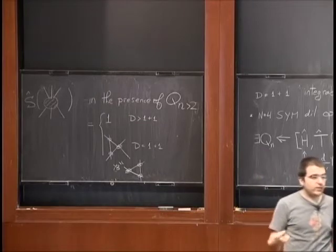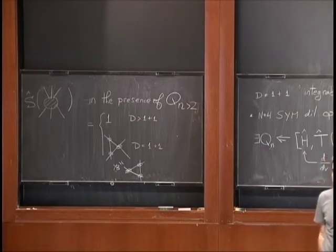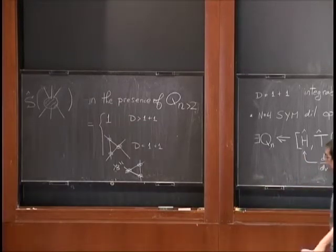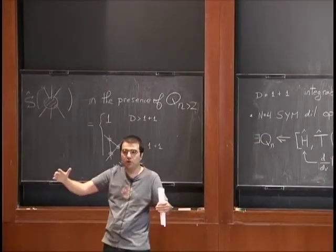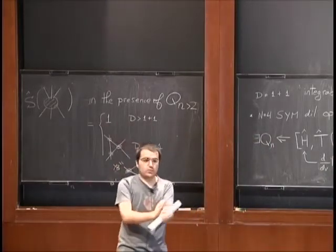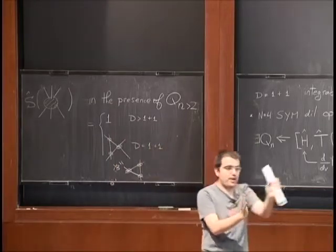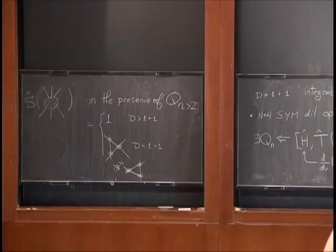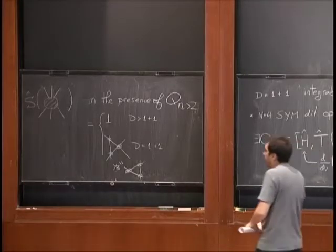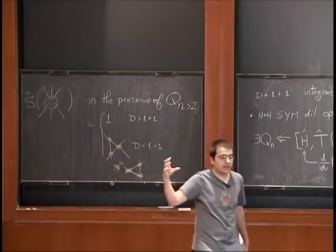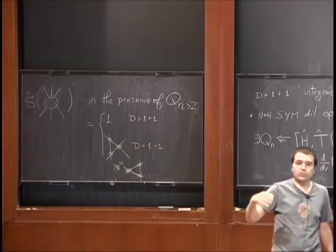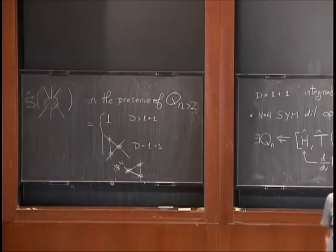However, we can get very rich and interesting theories if we stick to 1+1 dimensions. In 1+1 dimensions, what these extra charges implied was that by acting with these charges, we could translate the particles by an amount depending on their momenta. But since all the scattering is in a plane, there is no way the particles go far enough — they eventually need to scatter. Therefore, scattering factorizes.